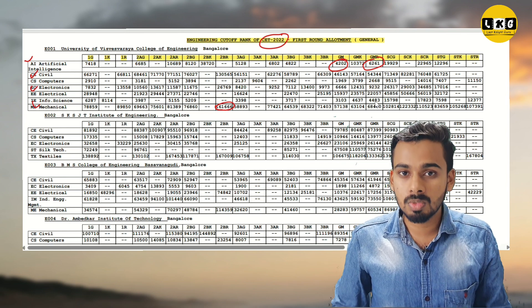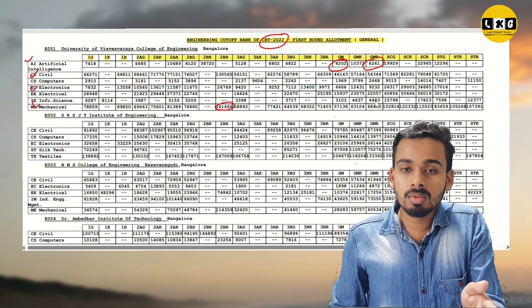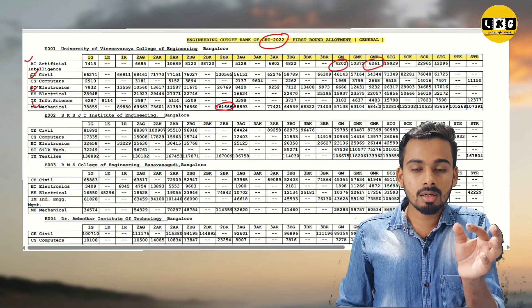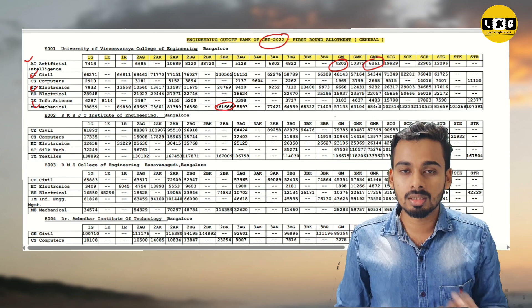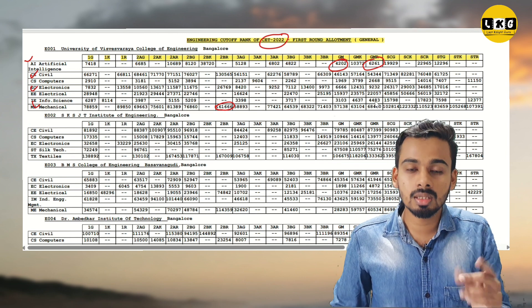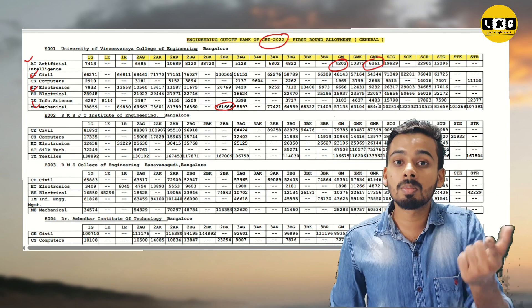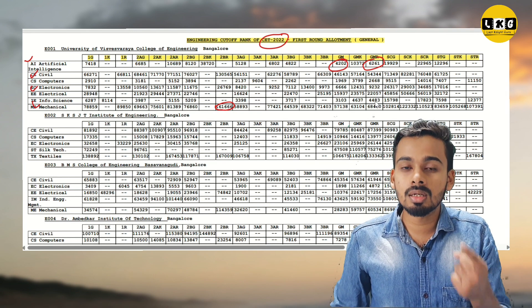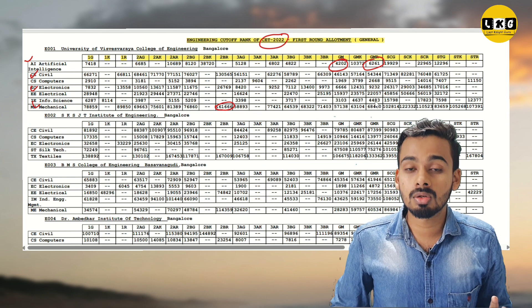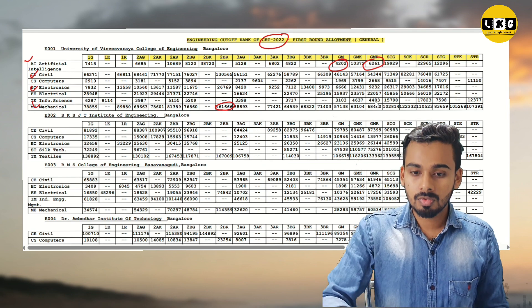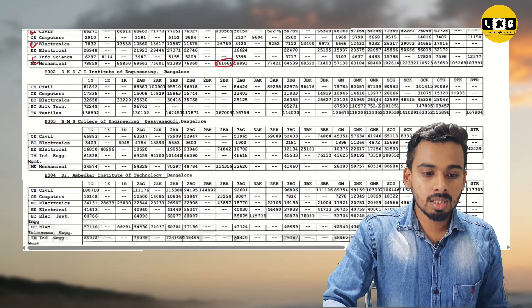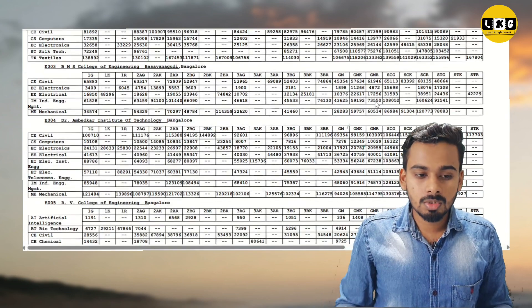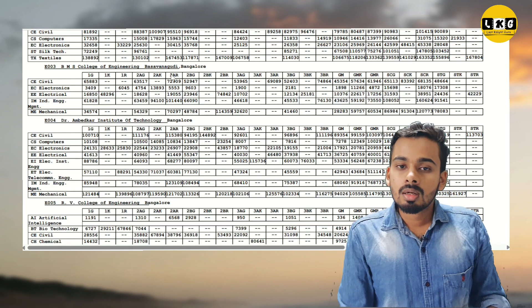On a priority basis: if you want to go to a particular college, check your availability. Look at your category and check the last year cutoff for that category. Make sure to note your cutoff ranking and plan accordingly. Do at least a minimum of 80 to 100 optional entries for colleges.